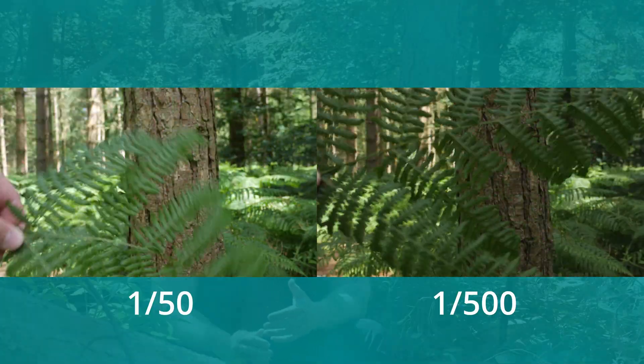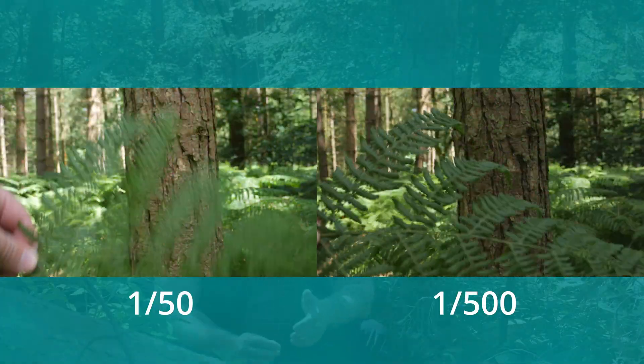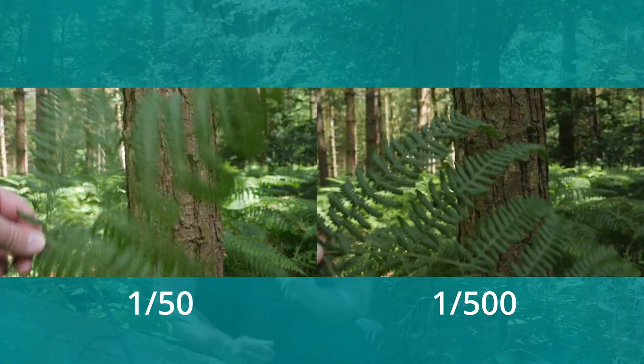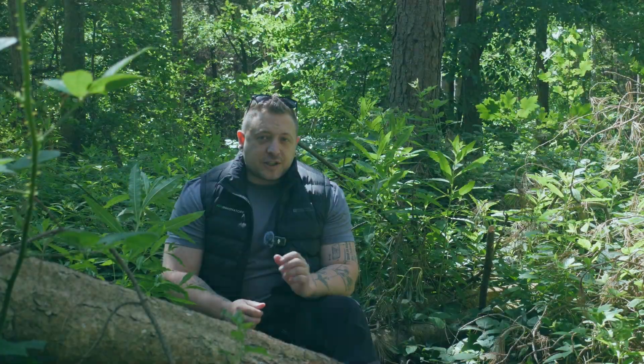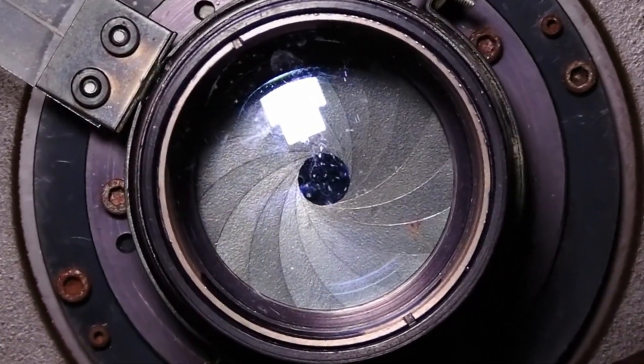Tip number one: increase your shutter speed. The higher your shutter speed, the less motion blur you're likely to get and as a result the sharper the image. If you're on a phone that might be tricky, but the latest iPhones and recent Android models let you dial in your shutter speed settings. If you're on a camera it's less of an issue.